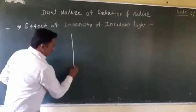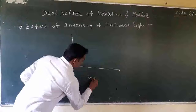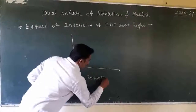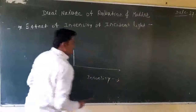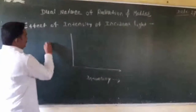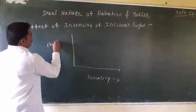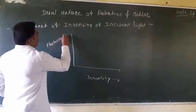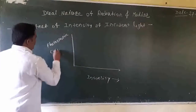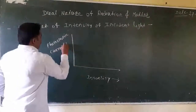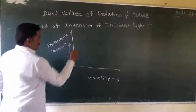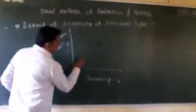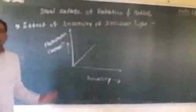If we plot a graph with intensity on the x-axis and photoelectric current on the y-axis, it is seen that it is a straight line.